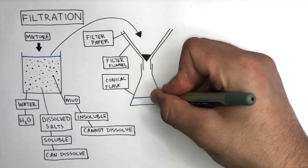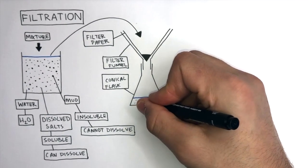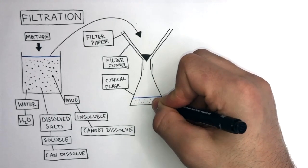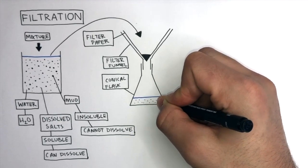The water molecules and dissolved salts are small enough to pass through the pores in the filter paper. So this flows through the pores and ends up in the conical flask where it is collected.